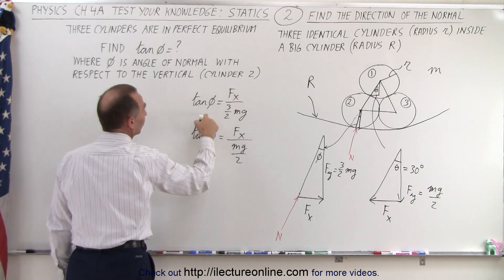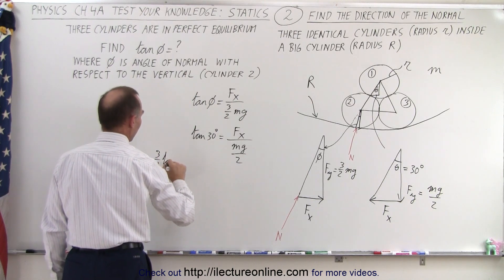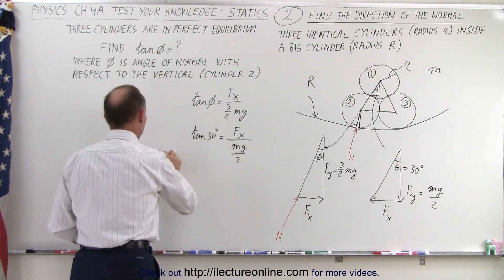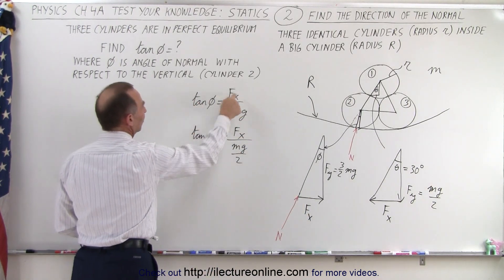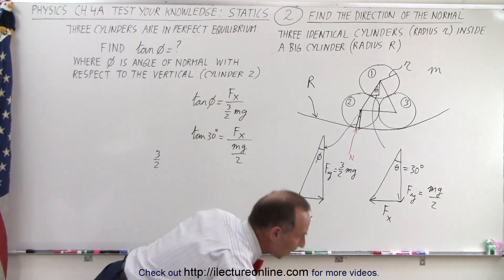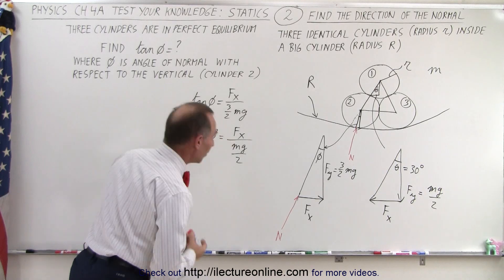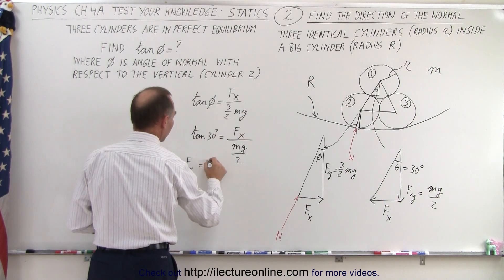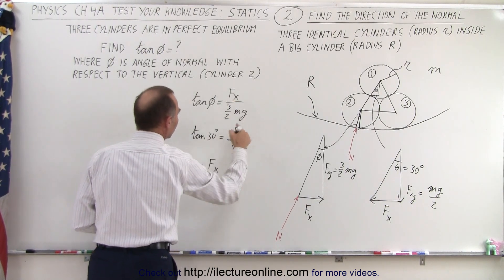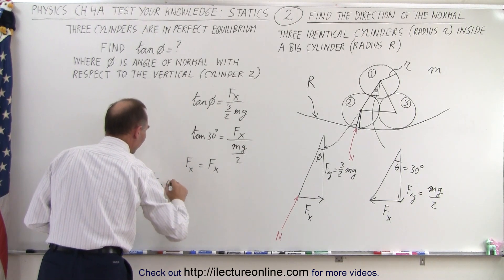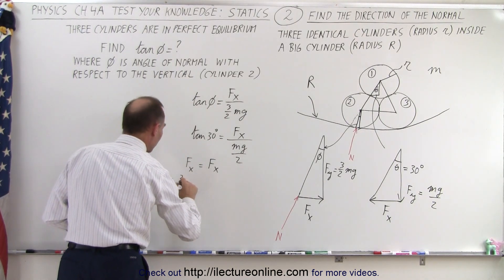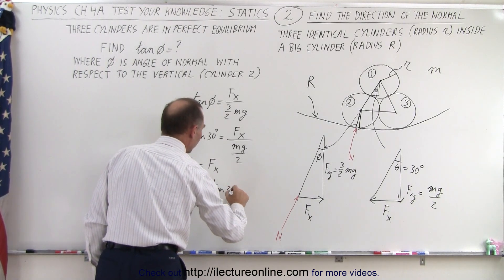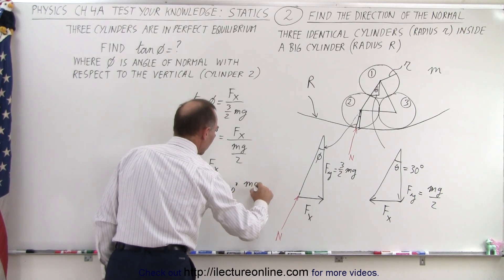And then of course, I can set the two F of X's equal to each other. So I'm going to take this F of X, so F of X equals F of X. So I'm going to set these two F of X as equal to each other, so I can say that the tangent of phi times 3 halves Mg must equal the tangent of 30 degrees times Mg over 2.